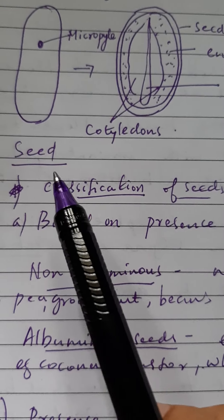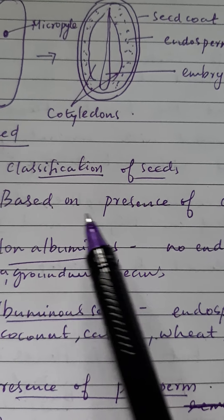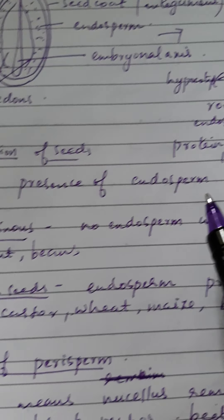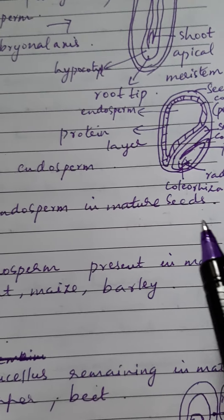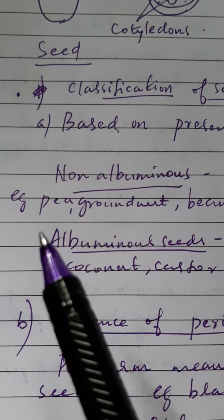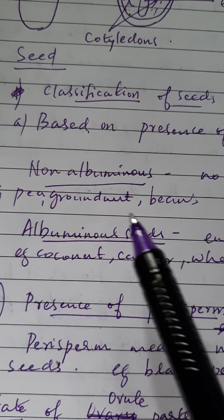Now the classification of seeds. Seeds can be classified based on the presence of endosperm. Non-albuminous seeds means no endosperm in mature seeds, for example pea, groundnut, and beans.